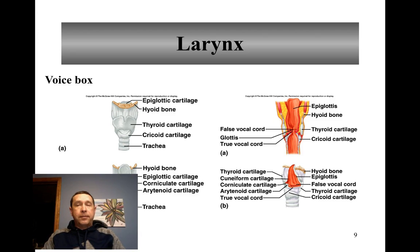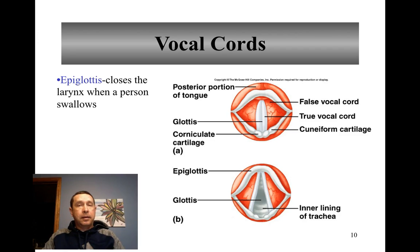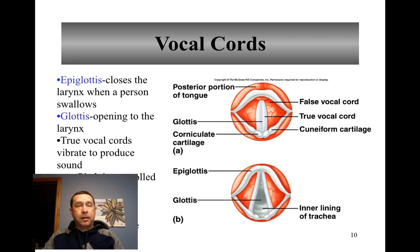In the voice box, we have two sets of vocal cords. The false vocal cords are above the true vocal cords and are there to protect them. The true vocal cords are the ones that produce sound when they vibrate. The opening to the larynx is called the glottis. The epiglottis, visible here from a superior view, closes the larynx when you swallow so food or liquids don't go down into your lungs.